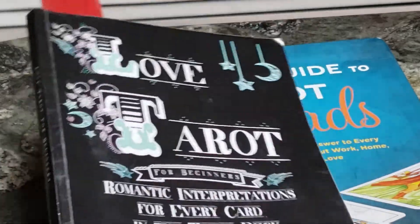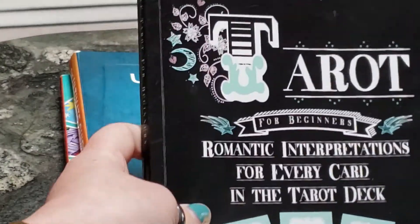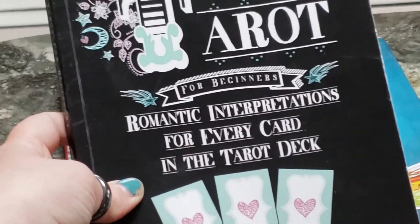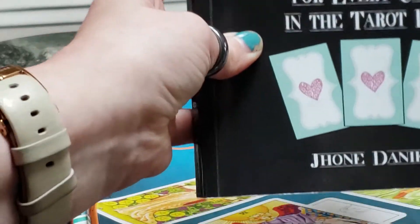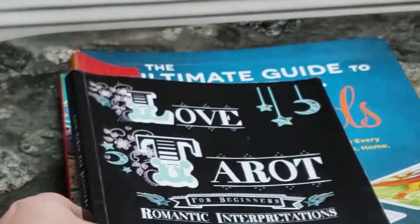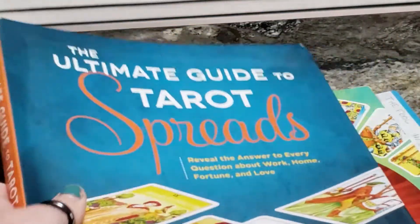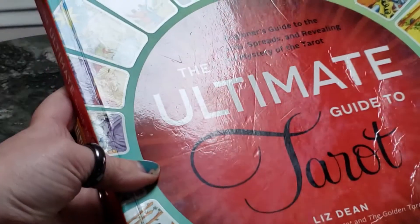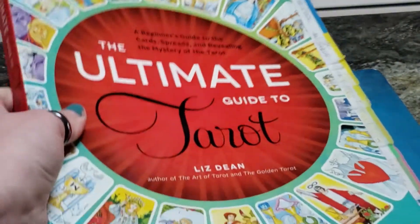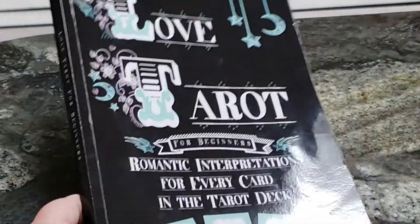We're going to do it this way instead. I want you guys to be able to see a little bit of the books. So we're going to try it like this because I am such a fabulous videographer. I'm actually going to show you three books instead of two. I changed that as well while I was filming. So this first one is called the Love Tarot for Beginners. And it is a romantic interpretation for every card in the tarot deck. And it is by Jhone Daniels, I think is how you pronounce that name. I'm not sure and I do apologize.